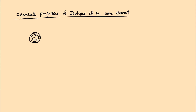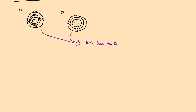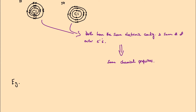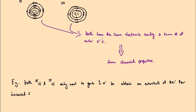Coming to the chemical properties of isotopes of the same element: isotopes are atoms of the same element. Let's take the two chlorine isotopes as an example — they both have the same electronic configuration and therefore the same number of outer electrons. Because of that, they have the same chemical properties, since it's the number of valence electrons that determines an element's chemical properties. Both chlorine-35 and chlorine-37 have seven valence electrons, and therefore both just need one electron to have a full outer shell of eight electrons, becoming stable like the noble gases.